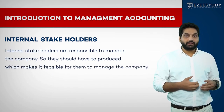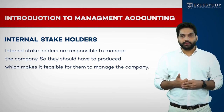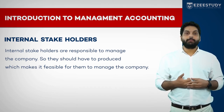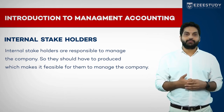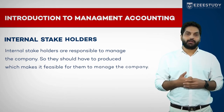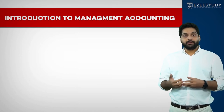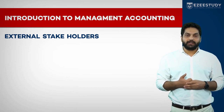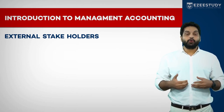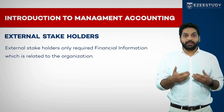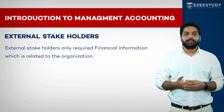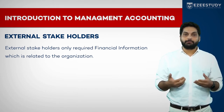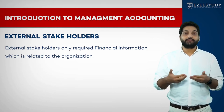Internal stakeholders are responsible for managing the company, so they need management information. External stakeholders, on the other hand, are attached to the organization and therefore need financial information such as the balance sheet, income statement, and cash flow statement, which tell them about the company's financial position.